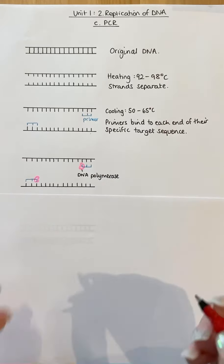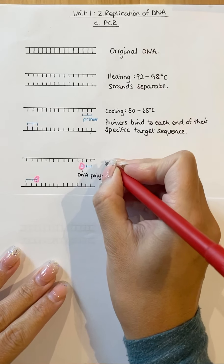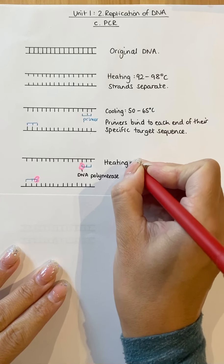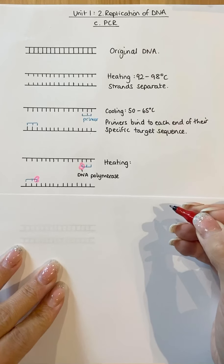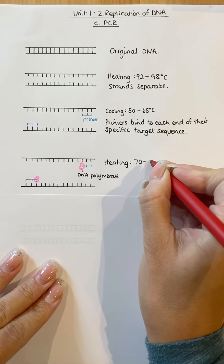Now, in this case, DNA polymerase is what's called heat tolerant. So in this stage, we have to heat it again. But at this point, it's not as high as the original heating. So it is around 70 to 80 degrees Celsius.